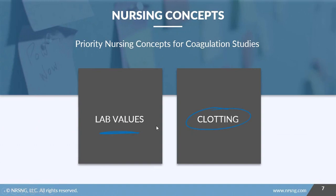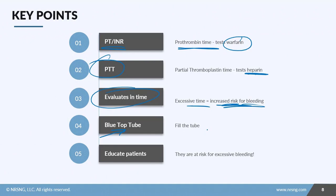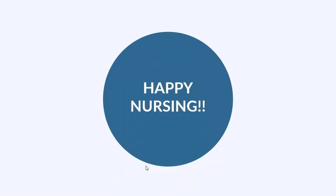The nursing concepts for this lesson focus on lab values and clotting. To recap: PT and INR measure prothrombin time and test for warfarin; PTT is partial thromboplastin time and tests for heparin. Prolonged times mean increased risk for bleeding. Submit samples in a blue top tube and fill it to the line. Educate patients on anticoagulant medications, their bleeding risks, and when to go to the emergency room. Be your patient's advocate.